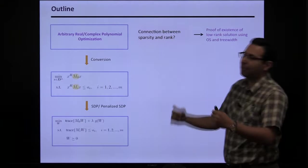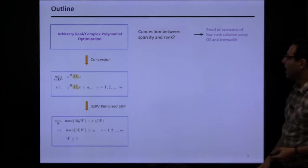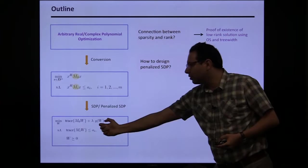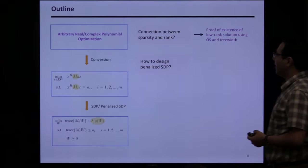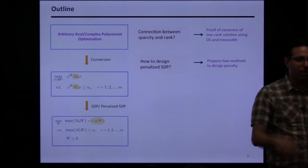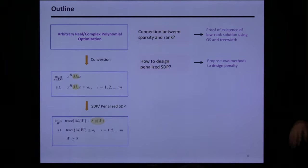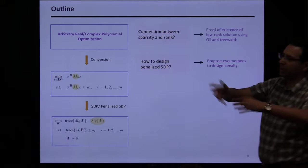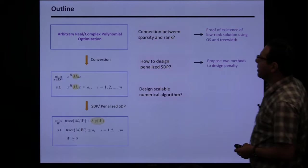It turns out the rank of W is upper-bounded by parameters of a graph that captures the sparsity. Among the infinitely many solutions, some are high-rank and some are low-rank; the lowest-rank solution has this bounded rank. The second challenge: once I know that for a sparse problem I have a low-rank solution W, how can I make it rank-one? We'll propose two techniques to design the penalty, generalizing ideas from compressed sensing.